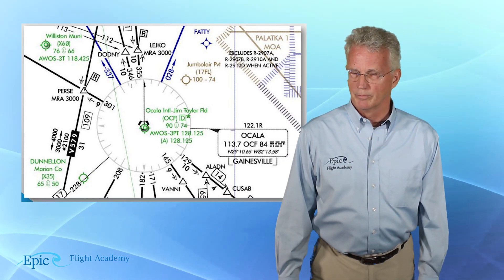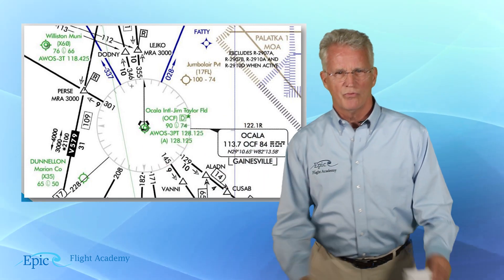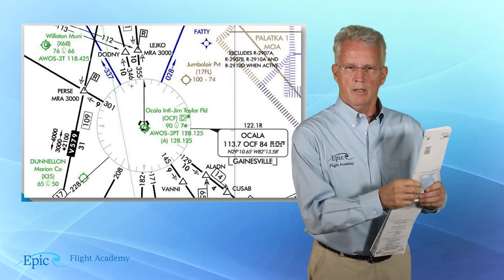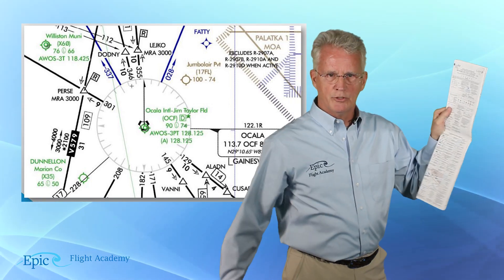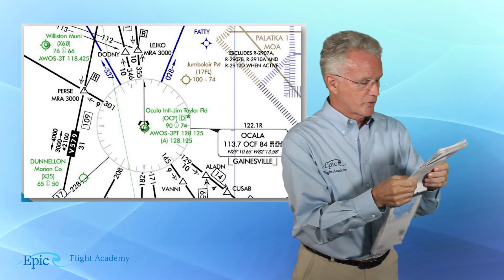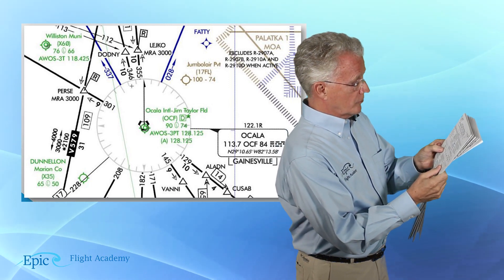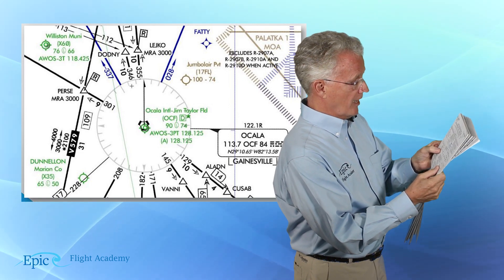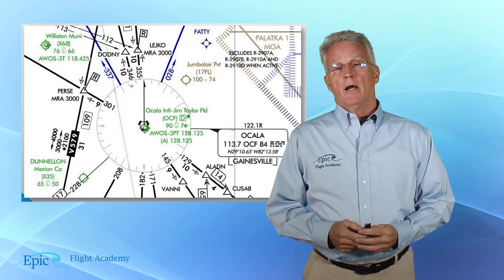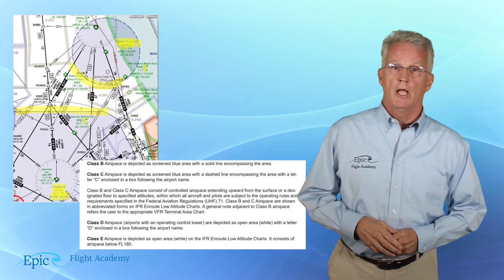Take a look at this slide showing the compass rose around Ocala International Airport. You can see a VOR co-located with the airport. Looking at the legend, the compass rose and/or north arrow are oriented to magnetic north of the nav aid.